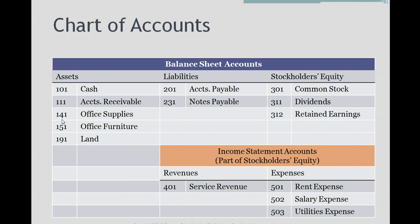This particular company has cash, accounts receivable, office supplies, office furniture, and land. Other companies will have a different chart of accounts and perhaps a different numbering system. But if you go work for a company and you hear the term chart of accounts, all it means is it's a list of accounts with numbers related to each account, containing all the accounts that a company has.